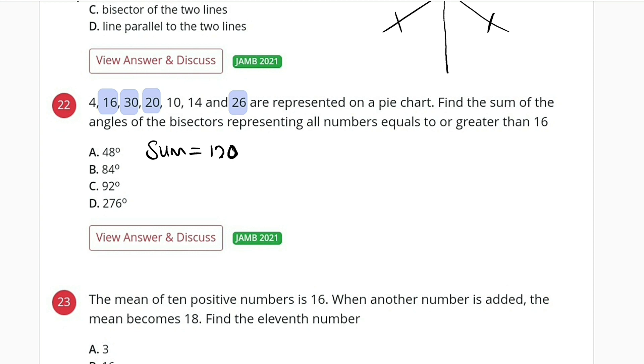These numbers that are greater or equal to 16, all of them, let us add them together. Sum of greater or equal to 16: we have them as 16 plus 30 plus 20 plus 26. We have them as 92.